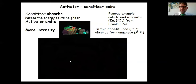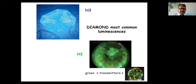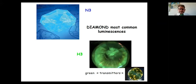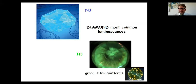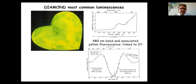Reviewing common luminescence in gems: in diamond, the N3 defect (three nitrogen around a vacancy) gives blue luminescence; H3 (A-aggregate at a vacancy) gives green emission — the so-called green emitters excited by visible blue/violet light; and the NV0 center gives orange luminescence around 575 nm as a sharp band. In corundum (ruby, sapphire), there are essentially three known causes of luminescence: red from chromium 3+, which is very common in ruby and synthetic spinel.